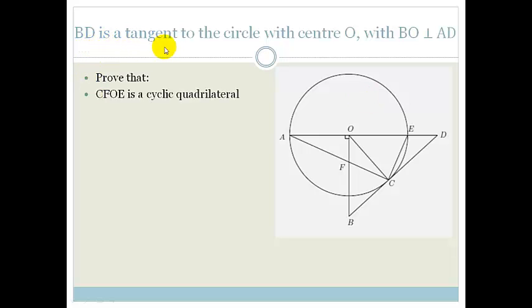So we're given that BD is a tangent to the circle with centre O, and BO being perpendicular to AD. So they ask us to prove that CFOE is a cyclic quad. So what do we know about cyclic quads? We know that cyclic quads have two things going for them. The one is that the opposite angles are supplementary. And the second is that the exterior angle equals the interior opposite angle. Let's try for the first one first of all.